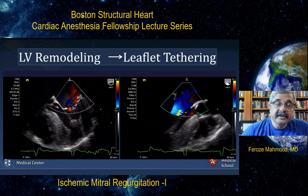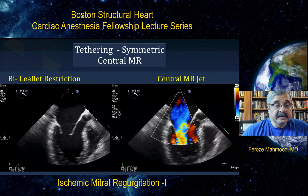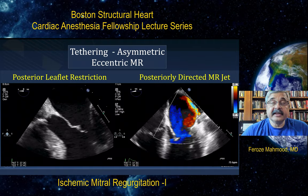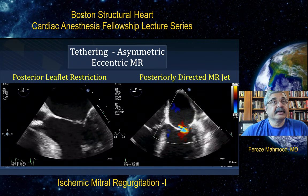The tethering can be symmetric — because of bileaflet restriction — which can lead to central mitral regurgitation, or the tethering can be isolated to the posterior leaflet, leading to asymmetric tethering and therefore, in this situation, a posteriorly directed MR jet, classically known as the Coanda effect.